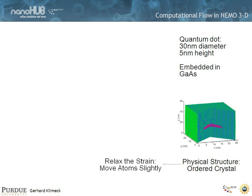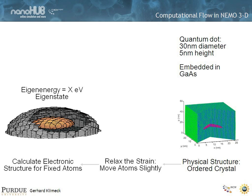Let's look at a 30 nm diameter quantum dot that is 5 nm high, embedded in gallium arsenide. In the computational procedure discussed in the previous lecture, you start from a physical structure, assume it to be ordered, and then run a valence force field calculation where you think of atoms as balls on springs and relax their positions to minimize total strain energy. That moves the atoms slightly, and then in the next step we lock these atoms in place and calculate the eigenstates of the big Hamiltonian matrix constructed as a function of atom positions and atom kind. That locks our Hamiltonian in place and we calculate eigenstates to find the eigenenergy of the system.